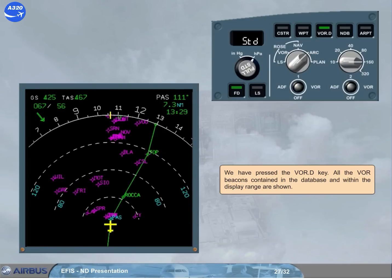We have pressed the VOR DME key. All the VOR beacons contained in the database and within the display range are shown.